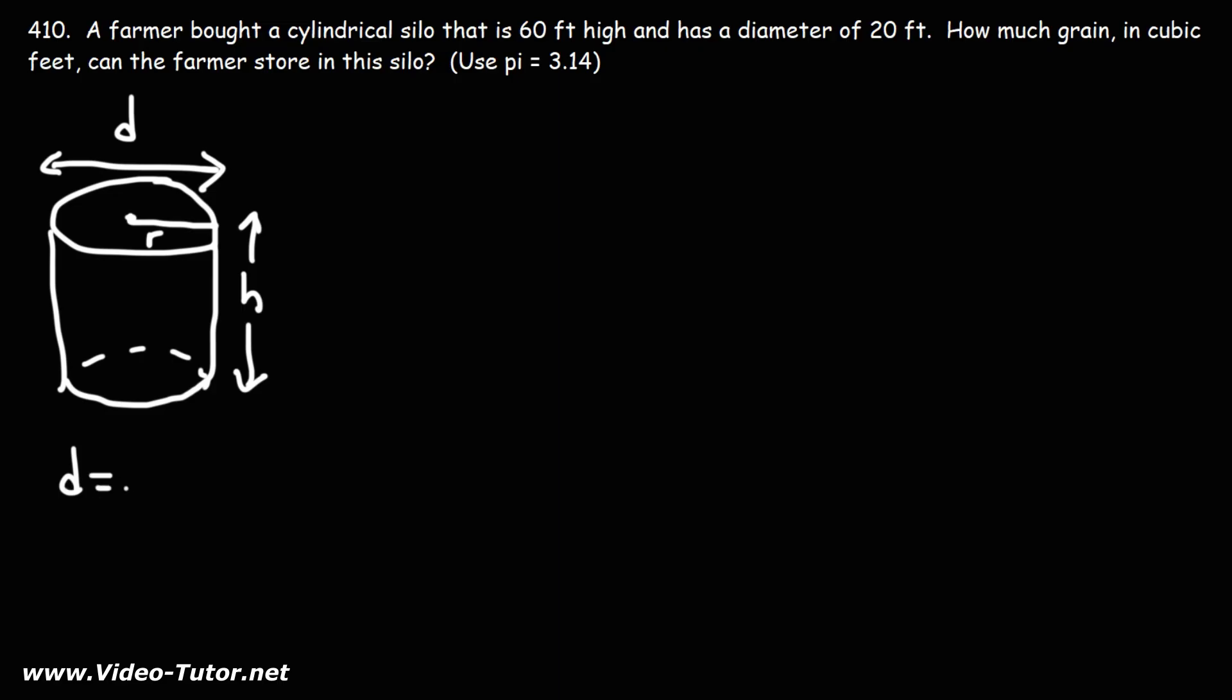The diameter is 2 times the radius, or the radius is 1 half of the diameter. Now we know that the diameter is 20 feet, but we need the radius to find the volume of the cylinder. The radius is half of the diameter, half of 20 is 10. So the radius is 10.